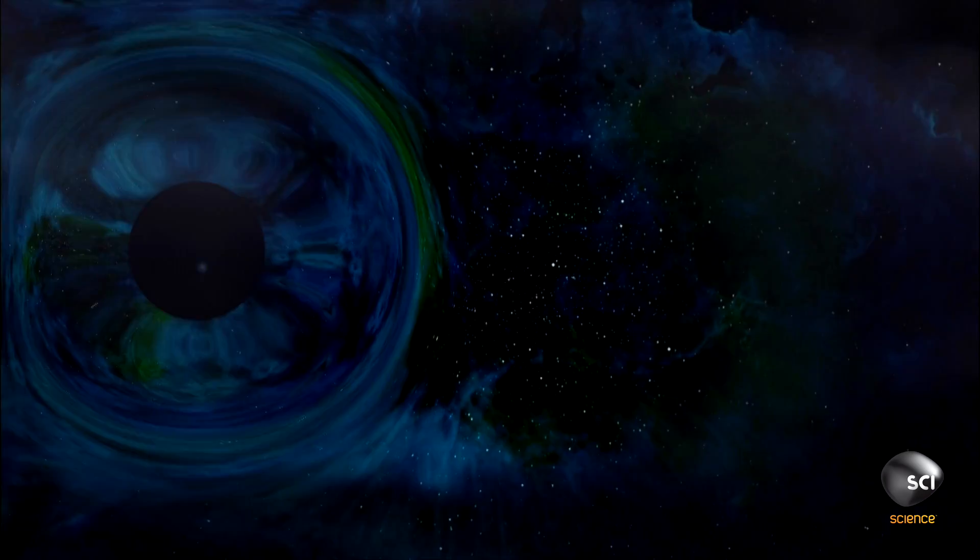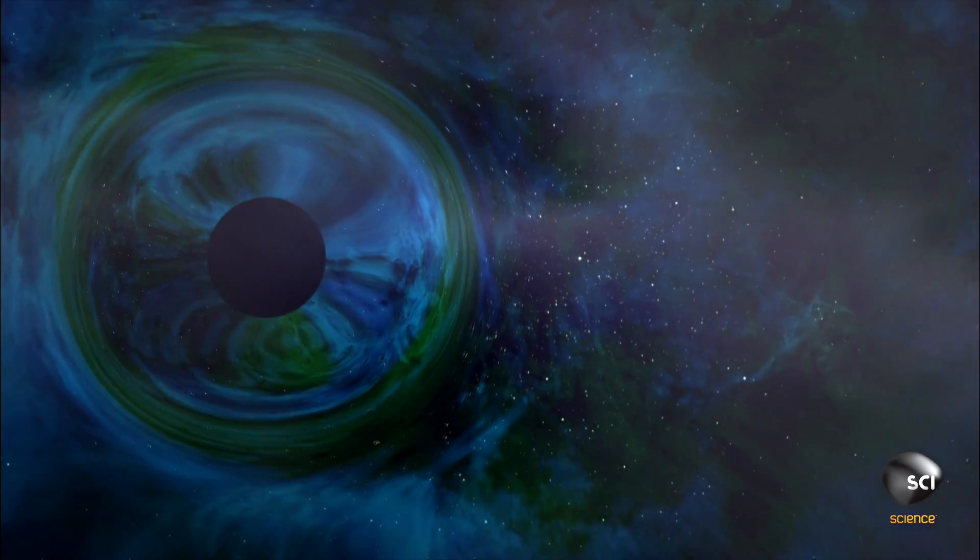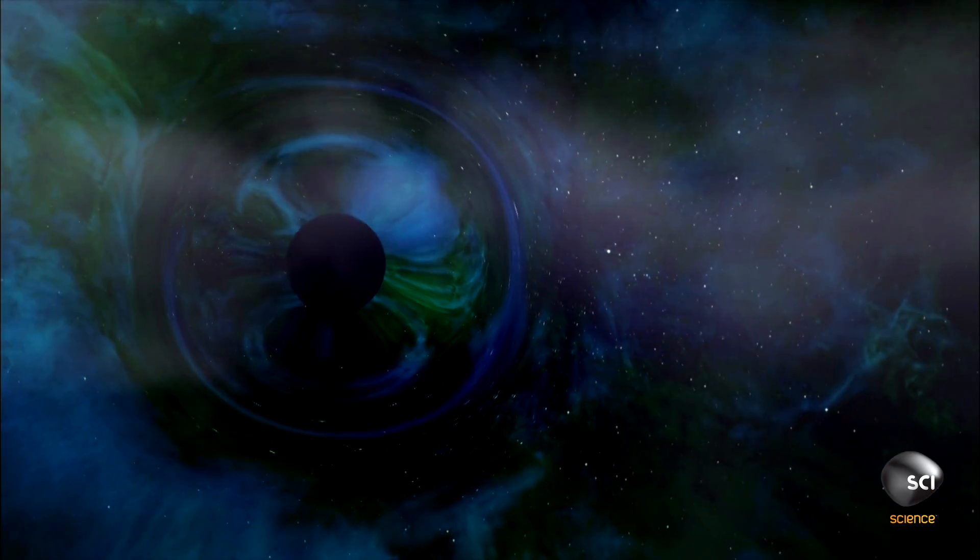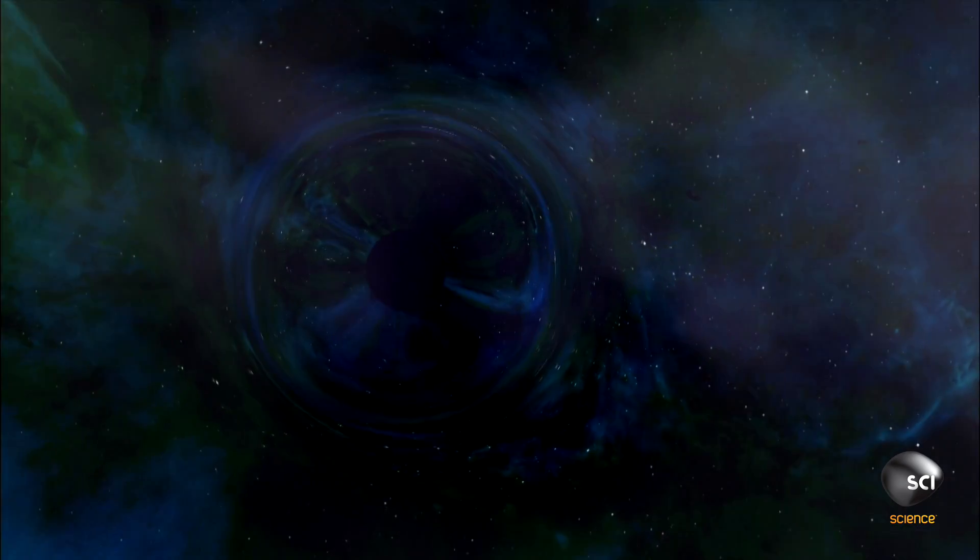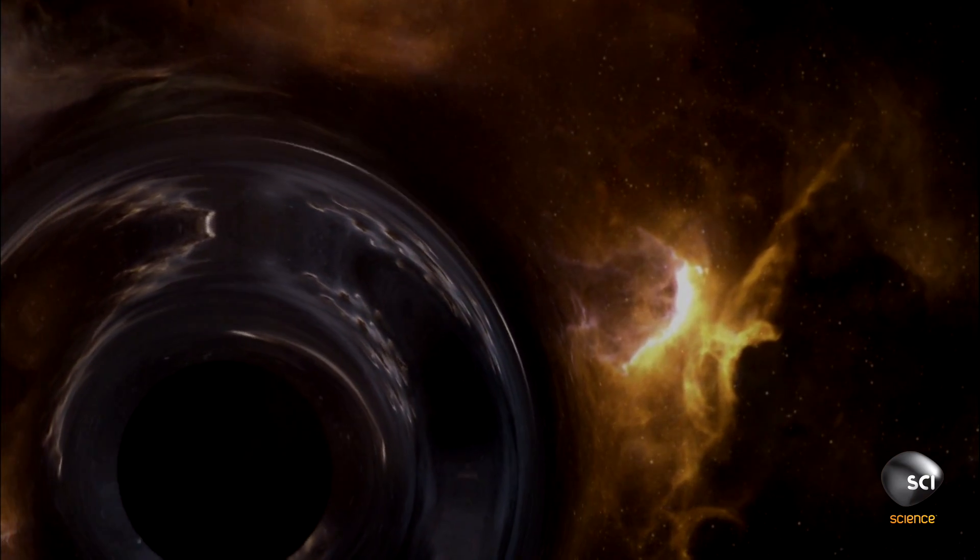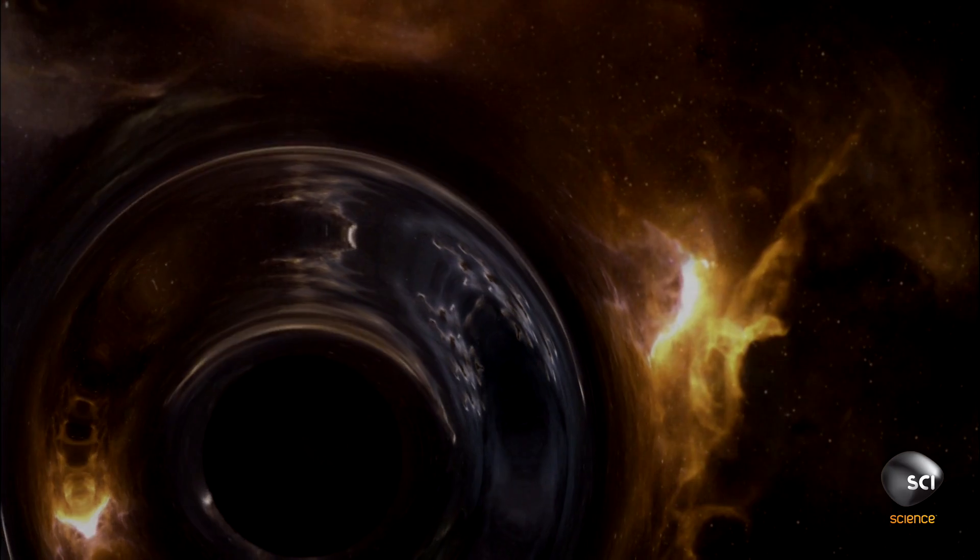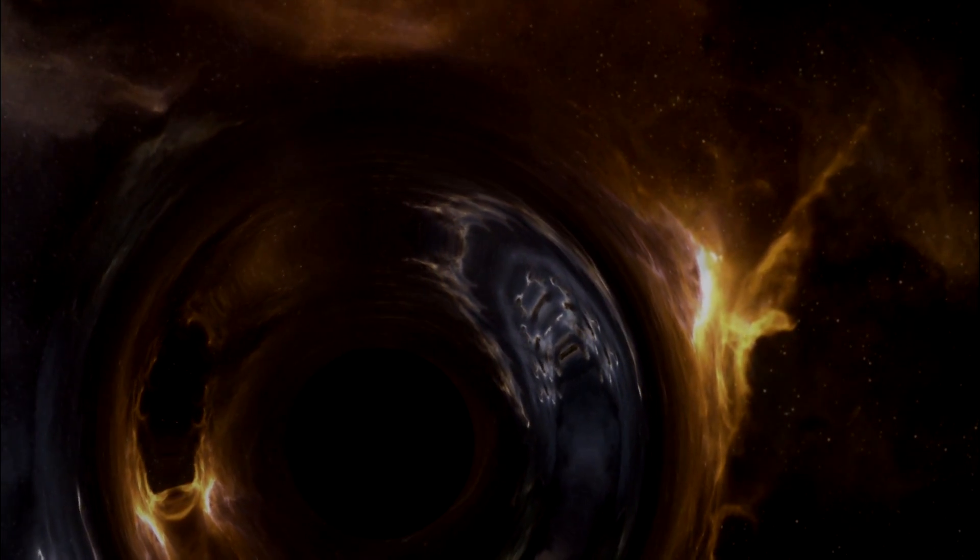The massive star crushes down until it's a fraction of its former size. But the star's original gravity remains, creating a gravitational field so strong nothing can escape it. The result is a black hole.